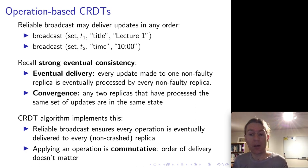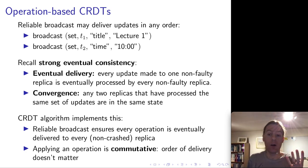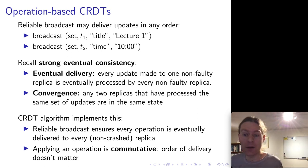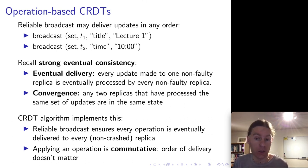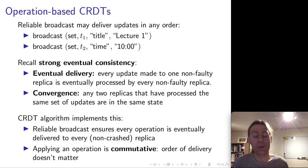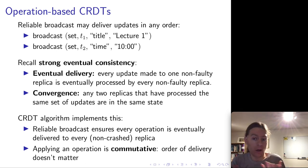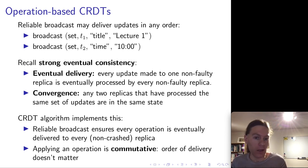This is called an operation-based CRDT because the things we're broadcasting are operations — one operation at a time in each broadcast. This does require the broadcast to be reliable, because if you're missing a message then you will never end up in a consistent state with the other nodes.